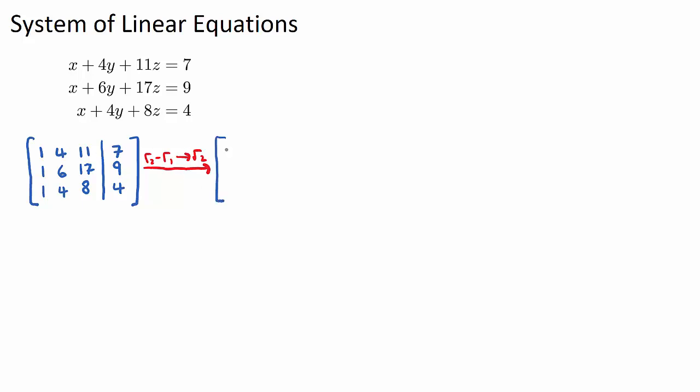So row 1 will be the same. It'll be 1, 4, 11, and 7. And then our new row 2 will be 1 minus 1, 6 minus 4, 17 minus 11, and 9 minus 7. And then we can just write our third row.